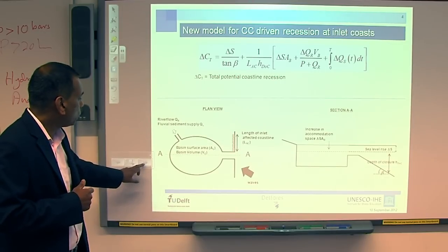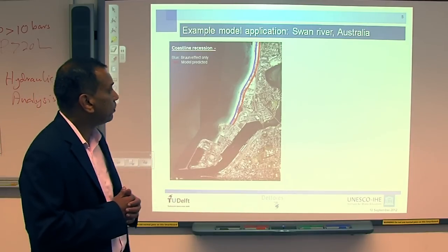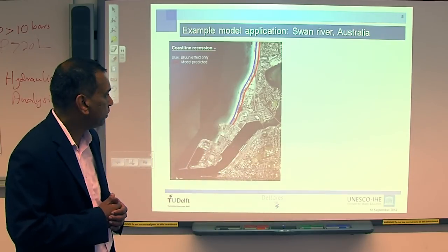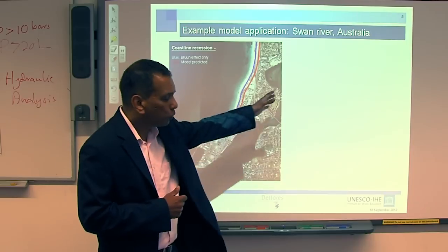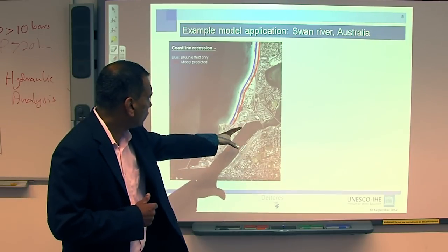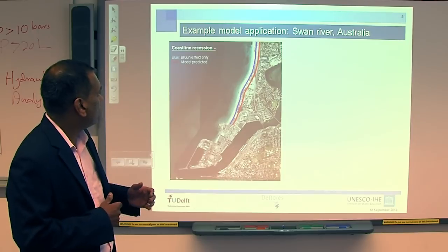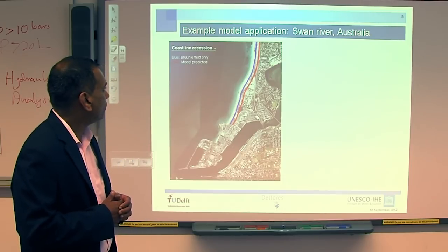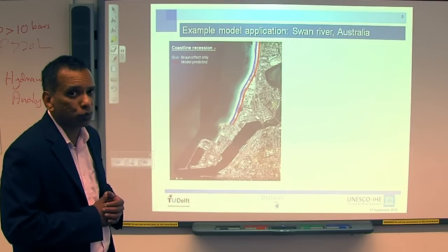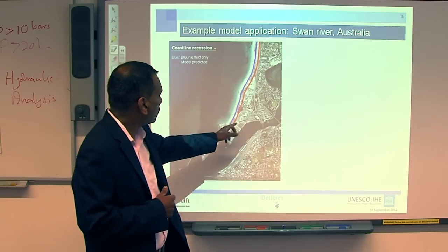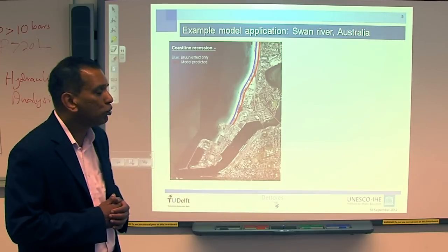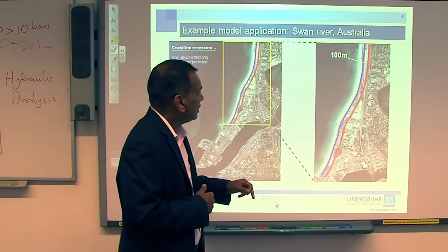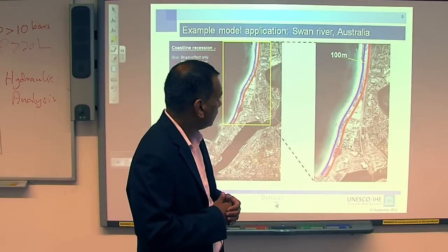I will show you one example application. This is an example in Western Australia in Perth. The city of Perth is a city of about 2 million people — the capital of Western Australia — built around the Swan River. The blue line indicates what the coastline recession would have been if we only used the Bruun effect, which is what is mostly used in studies today. The red line indicates the coastline recession predicted by our new model, which is quite a bit further inland. Zooming in on the highlighted area, you can see more clearly the difference between the two lines.